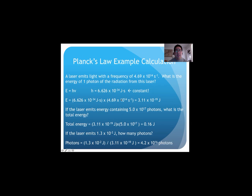And here's an example calculation using Planck's law. So let's say we have a laser that emits light with a frequency of 4.69 times 10 to the 14th seconds to the minus one. What is the energy of one photon of radiation from this laser? So we're talking about one particle of energy. So we would use our E equals HV, remember H is constant, and we have our frequency already so we just have to plug them together. And when we multiply together, this is how many joules one packet of energy coming from that laser has.